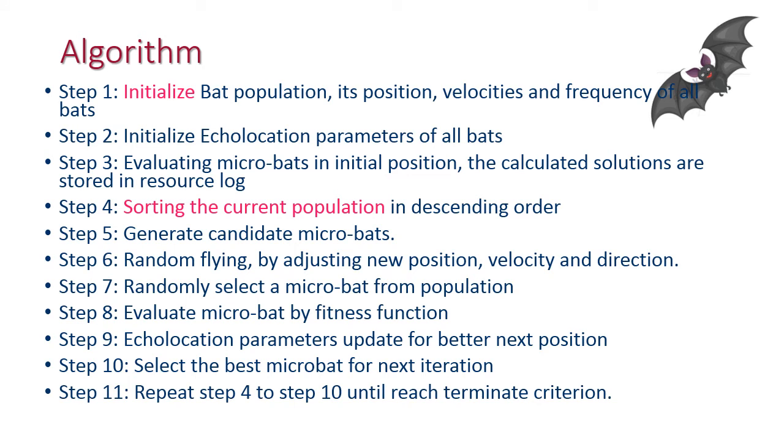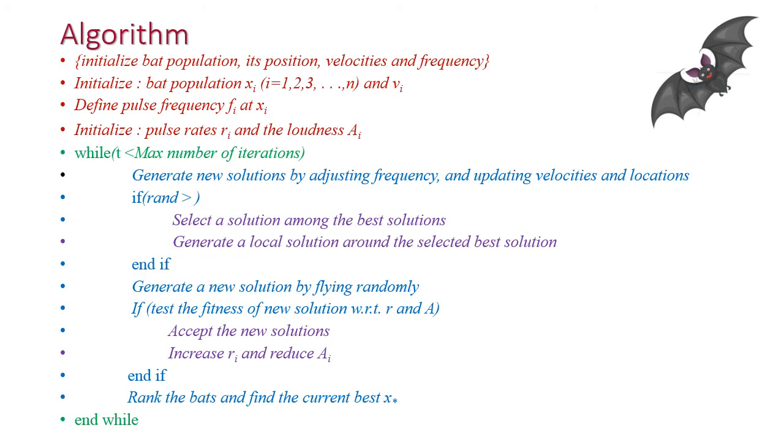This is the very basic pseudocode of bat algorithm. First, initialize the bat population ranging from 0 to n and assign the velocity, frequency, and position of all the bats. Next, initialize the pulse rate, that is the sound emitting rate, and loudness of all the bats. For all iterations, generate new solutions by adjusting frequency and updating velocity and location.